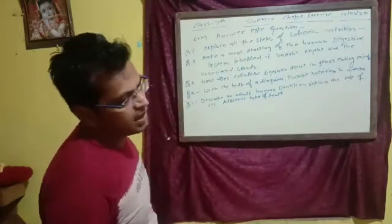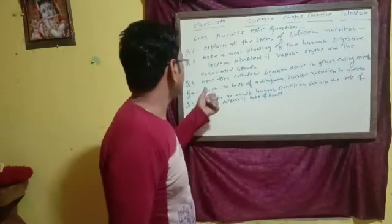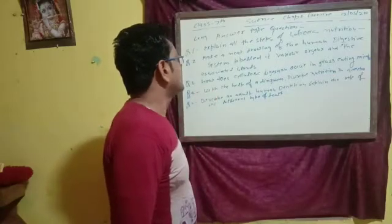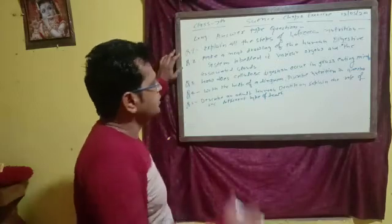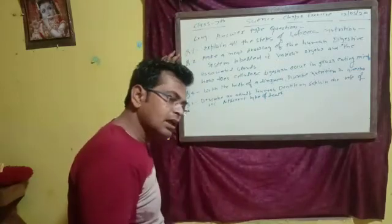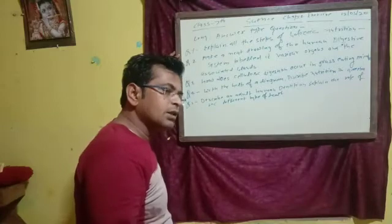The third one is: how does cellulose digestion occur in grass eating animals? Cellulose digestion occurs in ruminants.